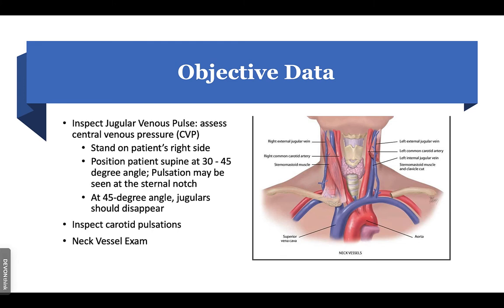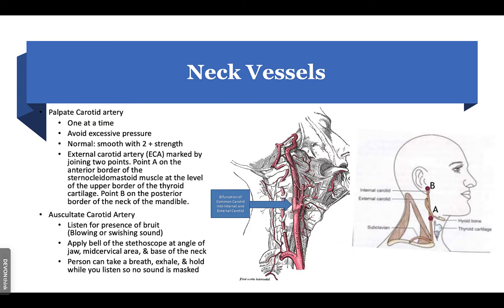For the neck vessel exam, when you palpate the carotid artery one at a time, the strength of the pulse should be a plus two. The carotid artery has two points — point A is at the anterior border of the sternocleidomastoid muscle at the level of the upper border of the thyroid cartilage, and point B is on the posterior border of the neck of the mandible. To auscultate the carotid artery, listen for the presence of a bruit. Apply the bell of the stethoscope at the angle of the jaw, mid-cervical area, and the base of the neck.